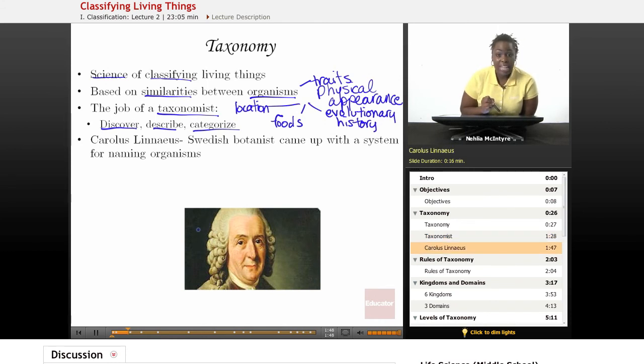Carolus Linnaeus was a Swedish botanist, and he was the first scientist to come up with a very organized system of classifying and naming organisms.